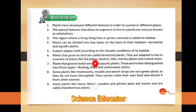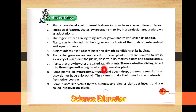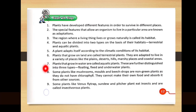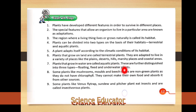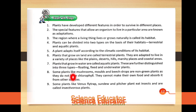Seventh point: plants that grow in water are called aquatic plants. These are further distinguished into three types — floating plants, fixed plants, and underwater plants.